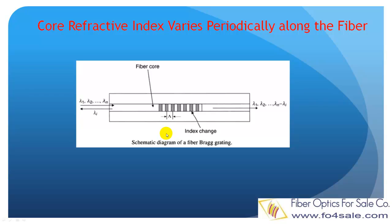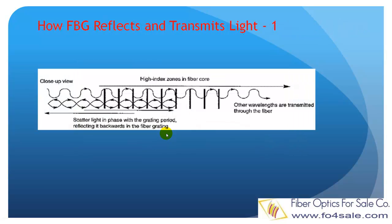So what kind of effect will this have on the fiber's light-guiding properties? As shown here, when light with many wavelengths is launched into a FBG, one particular wavelength is in phase with the grating period, and this wavelength is reflected back to the input end. All other wavelengths pass through to the other end, since they are not in phase with the grating period. This makes the FBG reflect a particular wavelength and transmit all others.